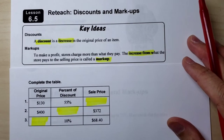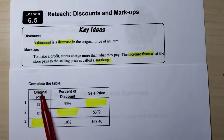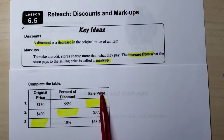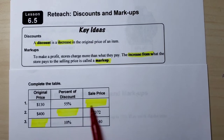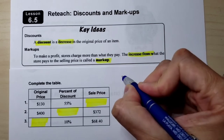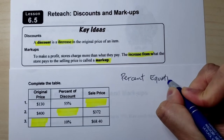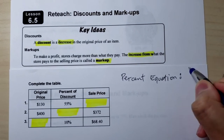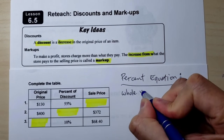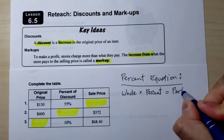Let's do this table right here. This table has the original price for the first column, the percent of discount for the second, and the sale price for the third column. Before we move on to solving this, we need to remember that we need to use the percent equation. The percent equation means the whole is multiplied by the percent, which is equal to the part.